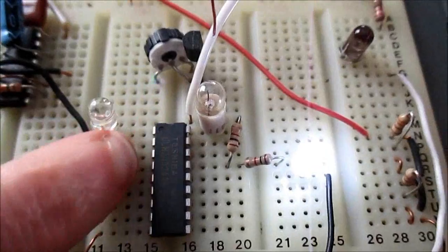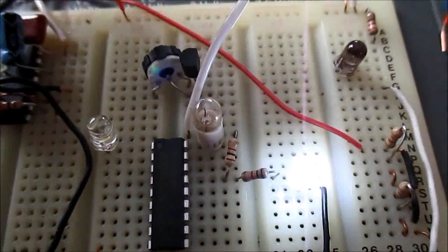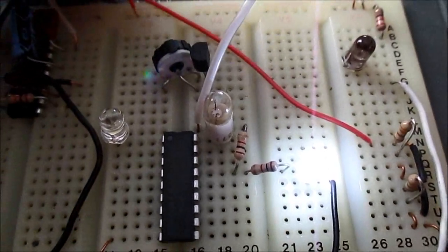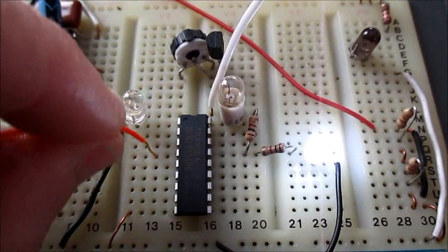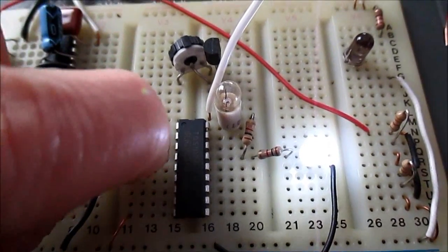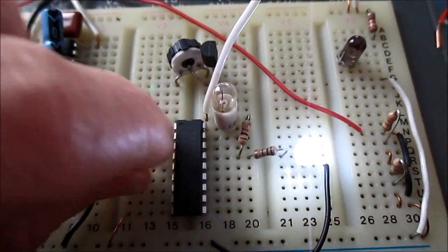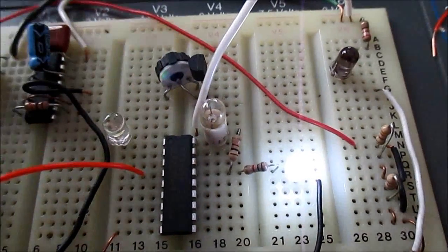So you can see a small amount of current controls a much bigger current there. And now to explain why this is called a, well, it was shown as an inverting buffer in the datasheet.